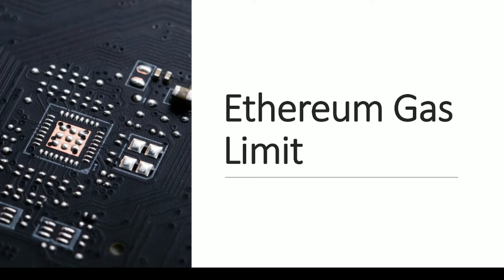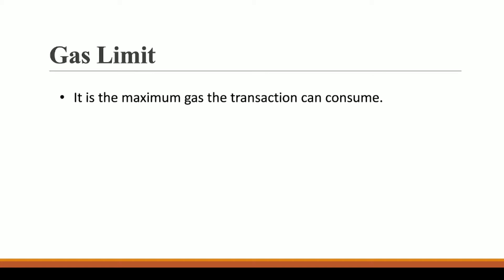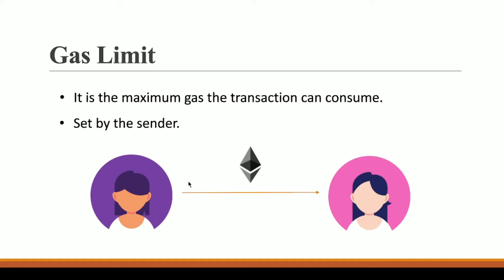In this video we are going to learn about Ethereum gas limit, which is a very important topic in the Ethereum blockchain. Ethereum gas limit is the maximum gas a transaction can consume. So let's say you are doing some kind of transaction — the maximum gas that your transaction can consume will be its Ethereum gas limit. This gas limit is actually set by the sender of the transaction. So if you are doing some ether transfer to your friend, you will be the one setting this gas limit.